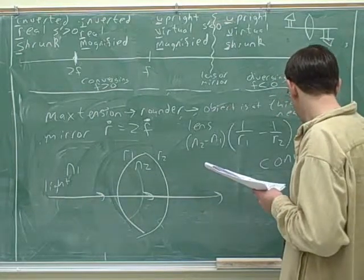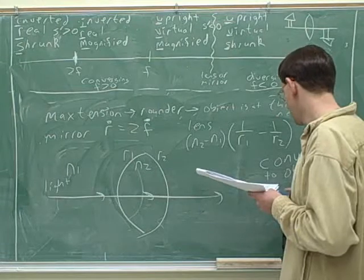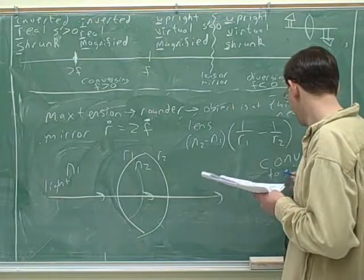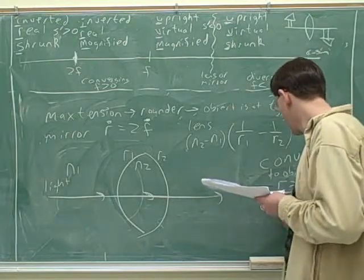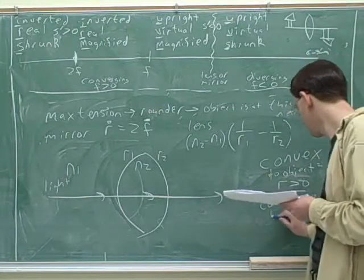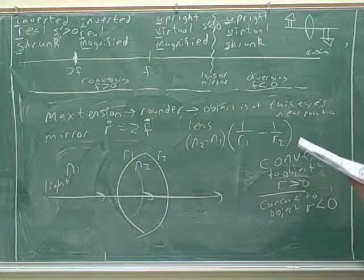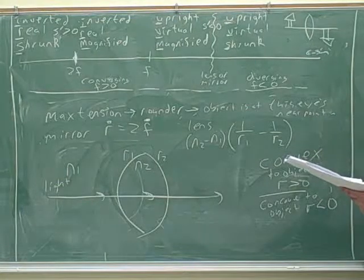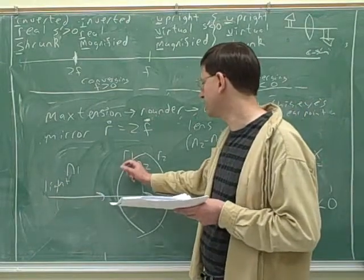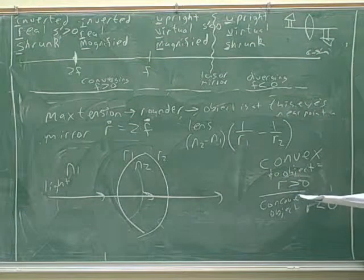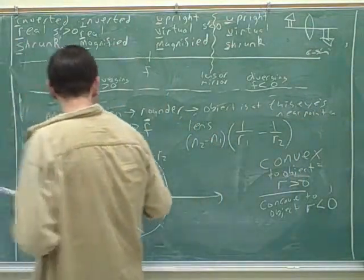And then we need a sign convention. Convex to the object means a positive R. And concave to the object is a negative R. So, in this case, would this be positive R or negative R? It's a positive R. Because the object is obviously over here, because this is where the light is coming from. Well, this side is convex to the object.